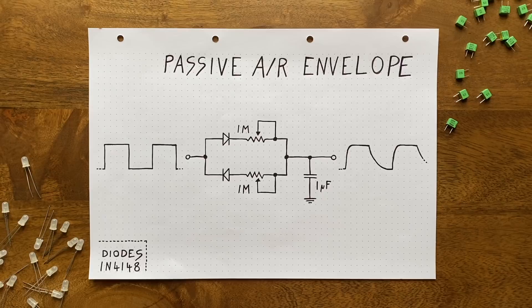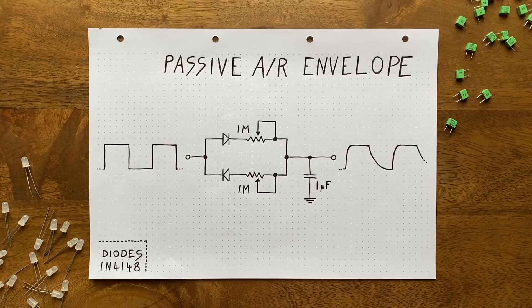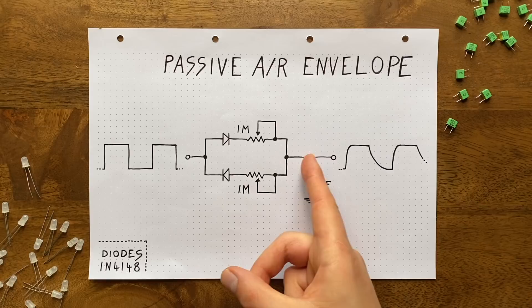That very much depends on what your goals and context are. In this current form, the envelope can only properly function if two external conditions are met. The circuit triggering it, in our case the oscillator, needs to be able to provide enough current. And the circuit we're controlling, in our case the filter, needs to draw as little current as possible from our envelope.